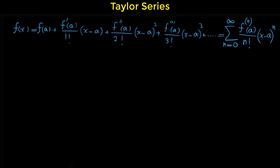In the particular case that a, the center, is 0, we give a special name to the Taylor series and we name it the Maclaurin series. So the Maclaurin series of a function is the Taylor series of the function but the point a is 0. So instead of having f of a we have f of 0 — we have to calculate the value of the function at 0.